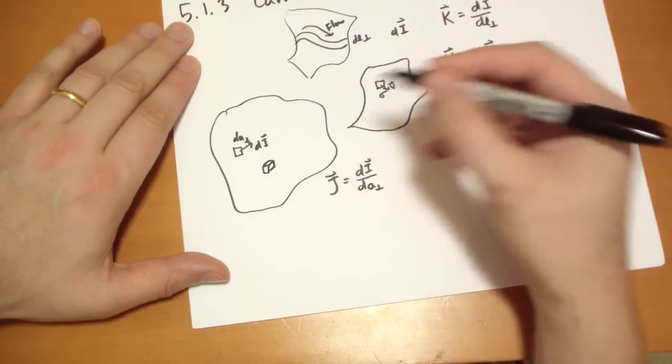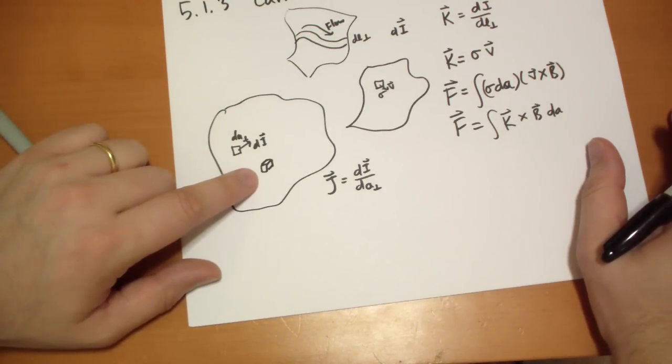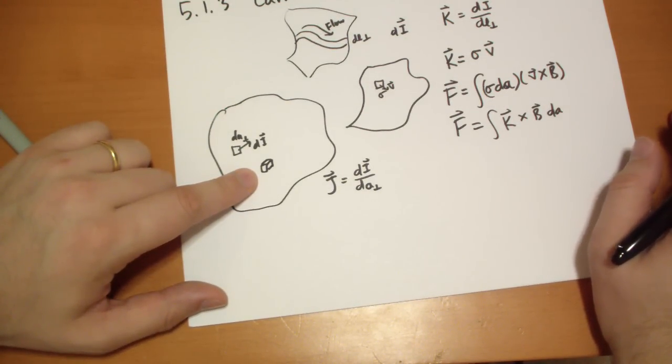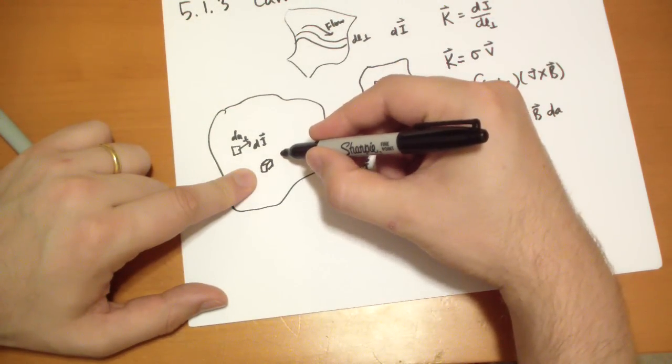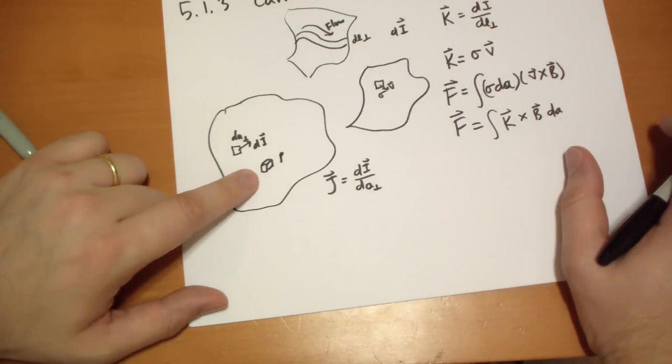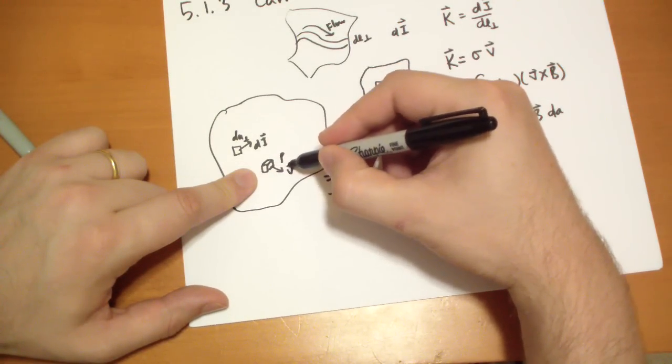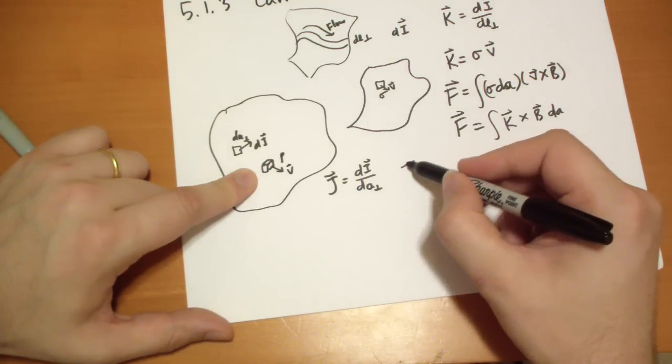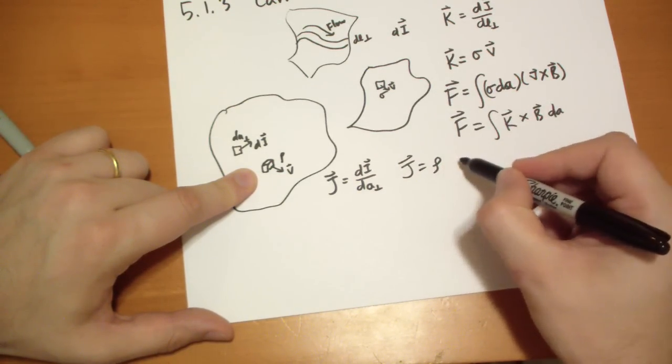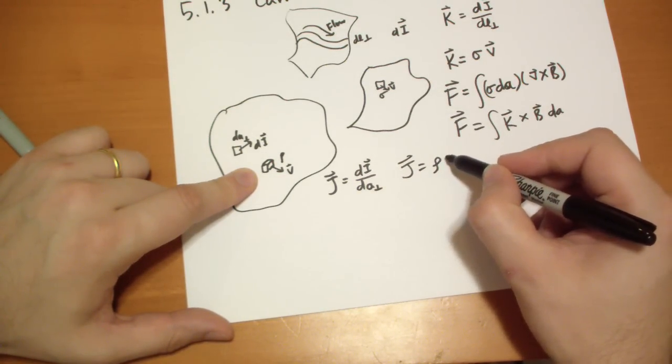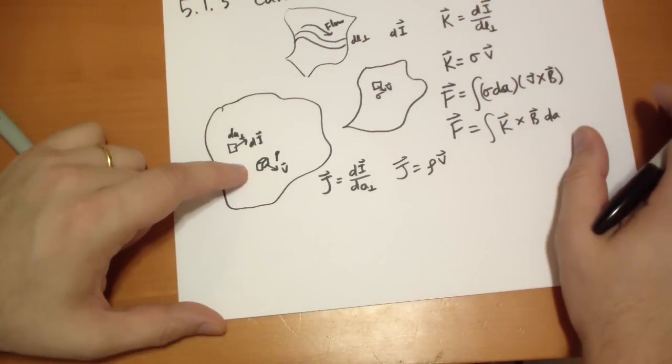where there's uniform charge density rho for that volume, and it's moving, right? Then we can calculate j vector as equal to the charge density at that point times the velocity at that point.